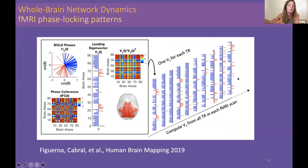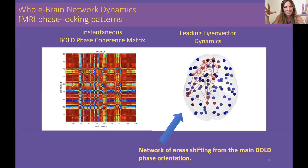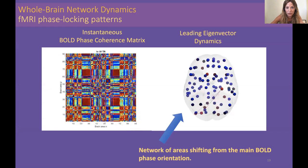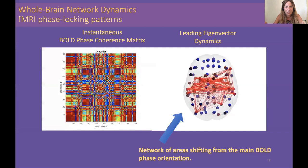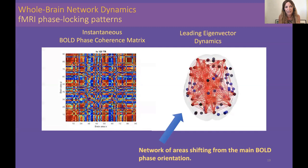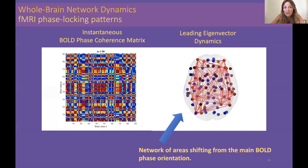We can then cluster and look at how the eigenvectors appear when projected into brain space. On the left side, this represents the BOLD phase coherence matrix — a matrix of the cosine of the phase difference. It is evolving over time and appears very noisy. On the right, we are plotting links between areas that are shifting their BOLD signal phase with respect to the main dynamics. The question is whether these shapes forming these networks are meaningful and recurrent.